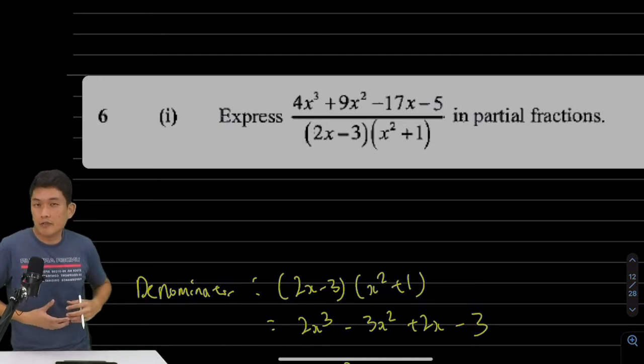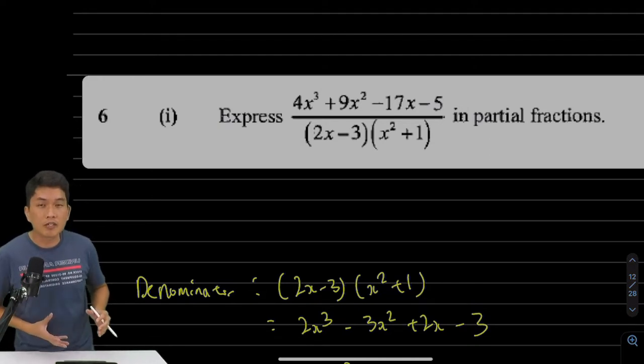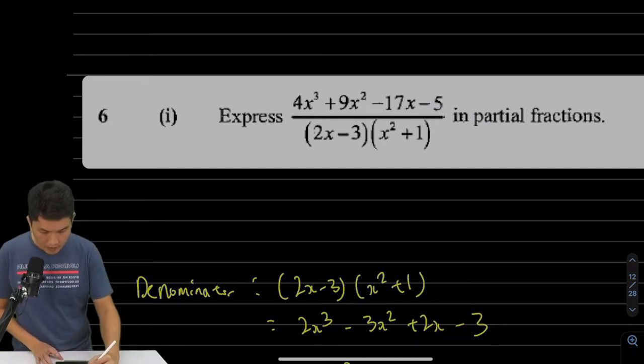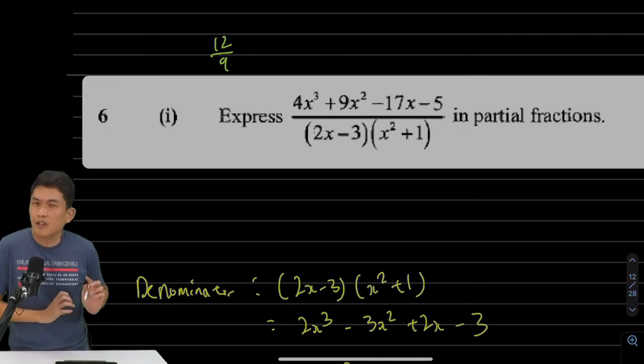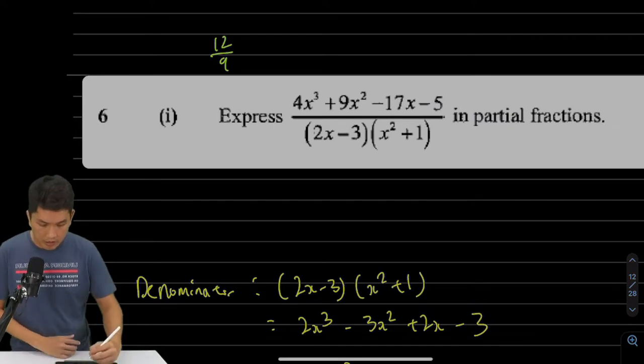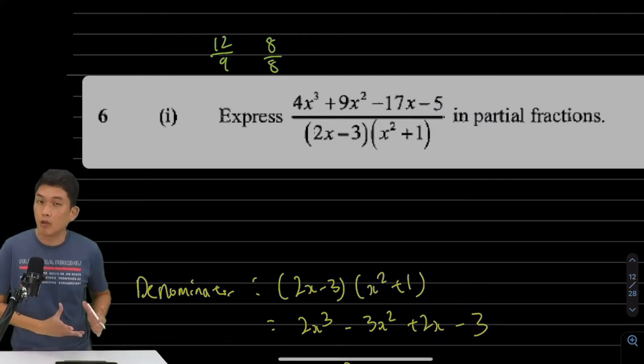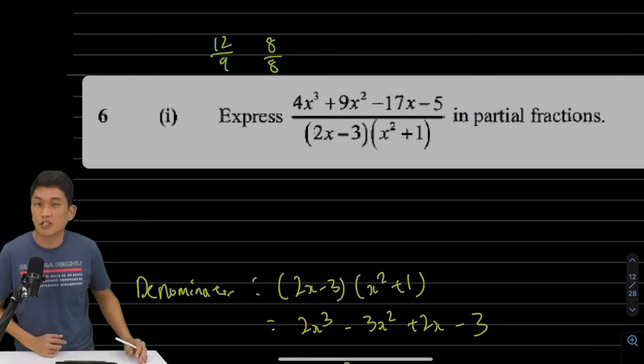Now, just like when you have concrete numbers, 12 over 9, that is an improper fraction. This is an improper fraction because the numerator is sort of larger than the denominator. Even if we were to write 8 over 8, this is also considered improper because the number is actually the same.